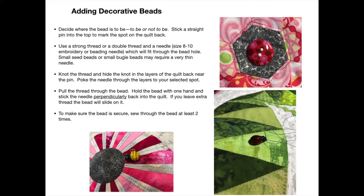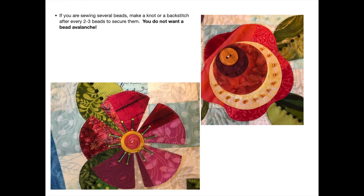Hold the bead with one hand and stick the needle perpendicularly back into the quilt — that's important. As perpendicular as you can be, if you leave extra thread on your bead then the bead will slide on it. To make sure the bead is secure, sew through the bead at least two times. Here is an example of the ladybug — see how the bead is straight up and down, the needle is straight up and down next to the head of the ladybug. It started at the back, went through the ladybug's body, and then goes back in. That will keep the ladybug from scooting around. If you're sewing several beads, make a knot or a back stitch after every two to three beads to secure them. You do not want to have a bead avalanche.